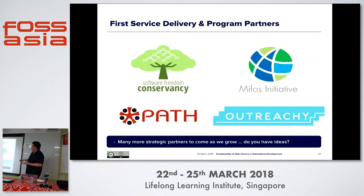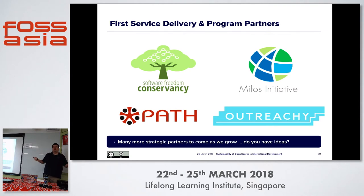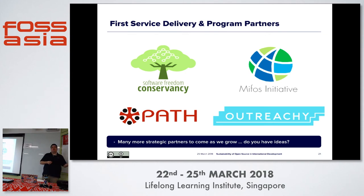We've got a lot of service delivery partners. Software Freedom Conservancy can help our projects with legal issues and fiscal services like managing bank accounts and registering trademarks. MIFOS and PATH are working in finance and healthcare respectively, hooking projects up with funding opportunities, grants, and collaborations where multiple software projects can work together and apply for significant funding. We're also a sponsor of Outreachy — similar to Google Summer of Code but focused on women and other underrepresented groups, matching them with a mentor and paying them for a summer or winter internship. We're getting ready to place five different interns through Outreachy.